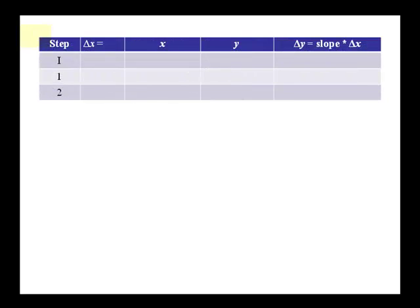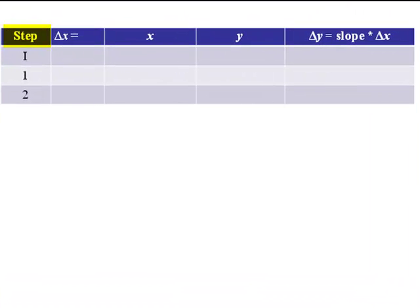First thing we do is we build a table with the number of steps, what our delta x will be, what our x is, what our y is, and then how to calculate our delta y. And those create our columns. Our rows will start with our initial condition, then however many steps we have. So we have two steps going first.